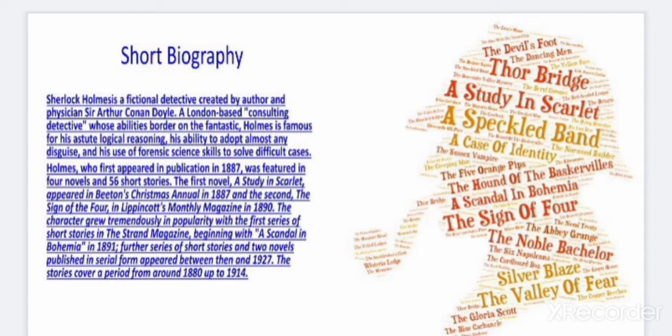Holmes, who first appeared in publication in 1887, was featured in four novels and 56 short stories. The first novel, A Study in Scarlet, appeared in Christmas Annual in 1887, and the second, The Sign of the Four, in Monthly Magazine in 1890. The character grew tremendously in popularity with the series of short stories in the Strand Magazine, beginning with A Scandal in Bohemia in 1891. Further series of short stories and two novels published in serial form appeared between then and 1927. The stories cover a period from around 1880 up to 1940.